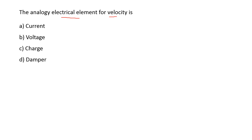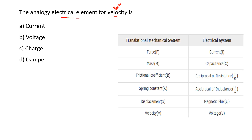Next: the analogous electrical element for velocity is — options are: current, voltage, charge, damper. Velocity is a translational mechanical system quantity. From the analogy table between translational mechanical system and electrical system, velocity corresponds to voltage. So option B is the right answer.